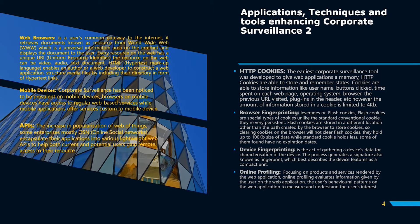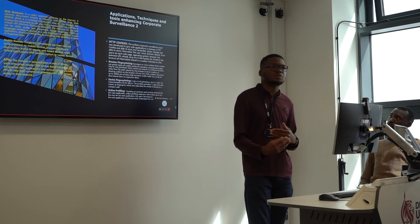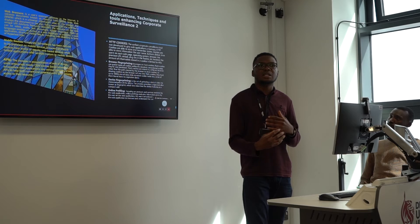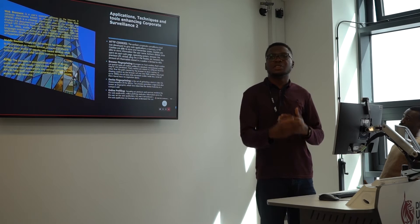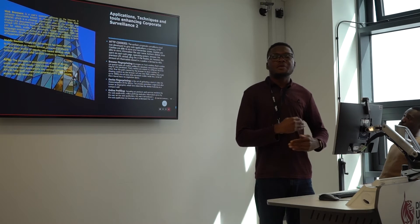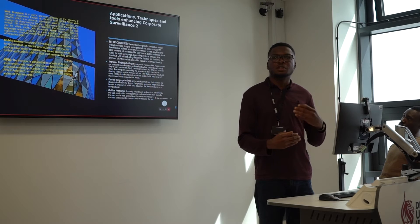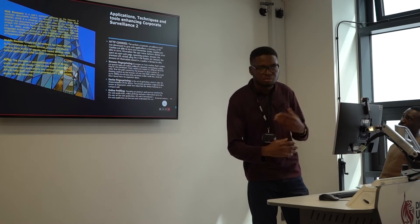HTTP cookies is the earliest corporate surveillance tool, which was developed to give web applications better memory. The idea behind HTTP cookies was to enable the web application to continue from where you stopped the next time you visit. So whenever you visit a web application for the first time, you set some preferences like currency, language, time zone, and all that. The web application uses cookies to remember all your preferences and know more about you.